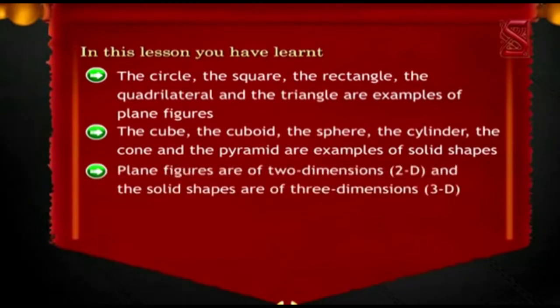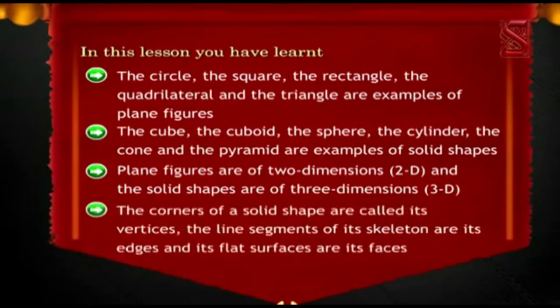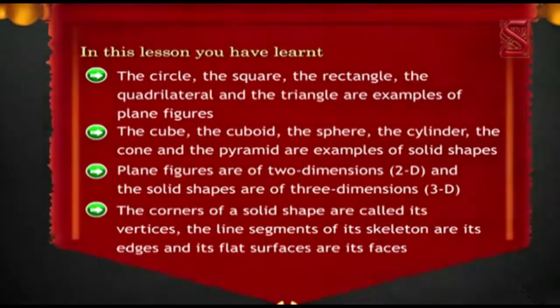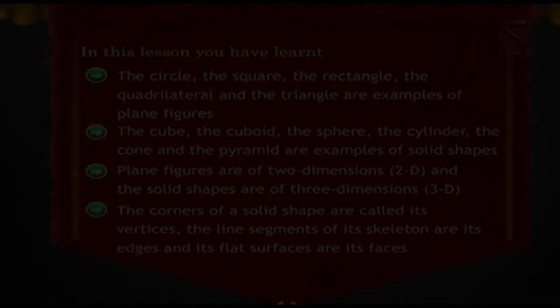Plane figures are of two dimensions (2D) and the solid shapes are of three dimensions (3D). The corners of a solid shape are called its vertices. The line segments of its skeleton are its edges, and its flat surfaces are its faces.